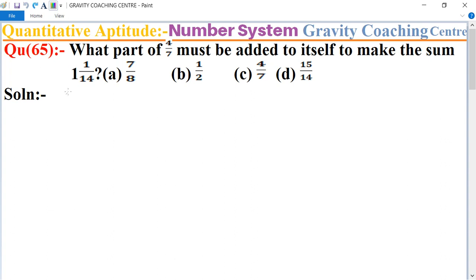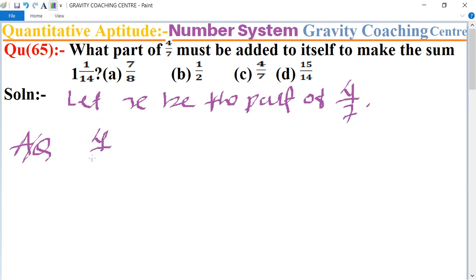So first we let x be the part of 4/7. According to the question, x be the part of 4/7 means 4/7 times x.